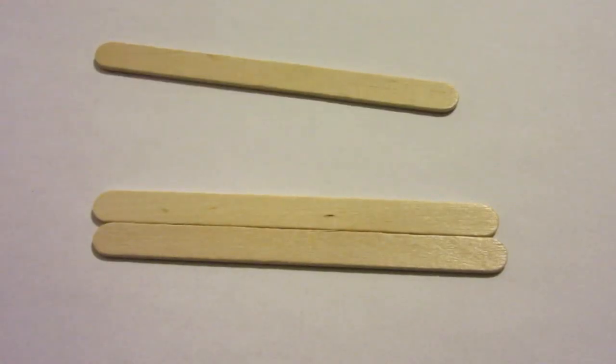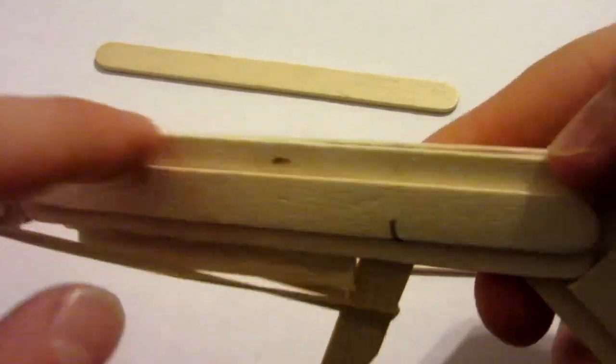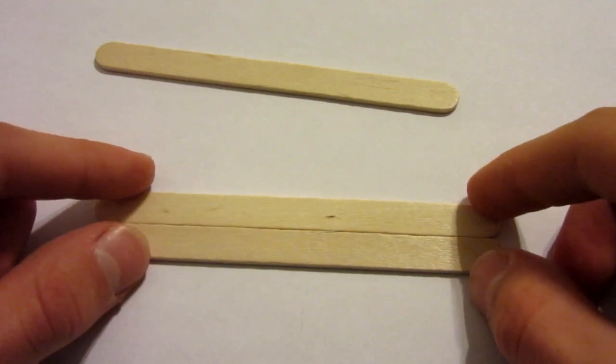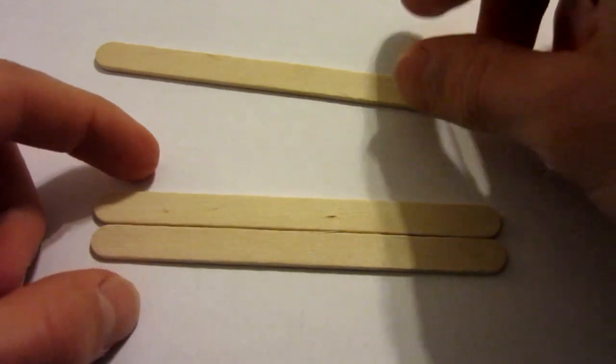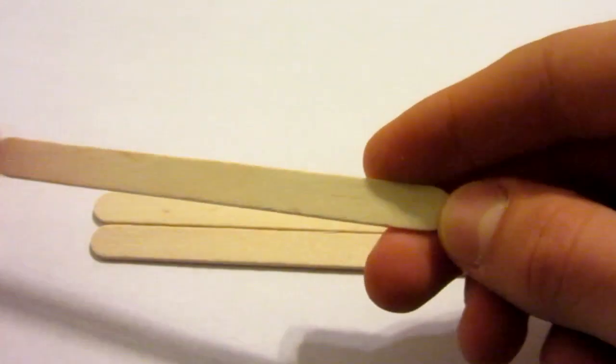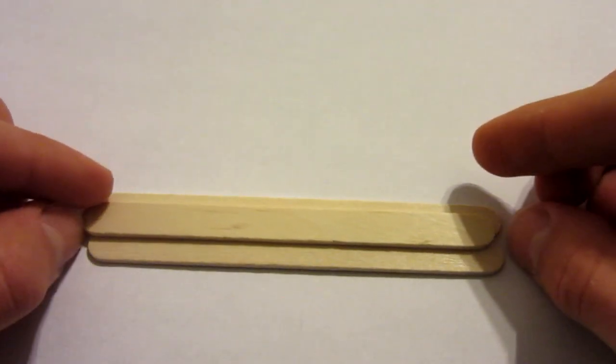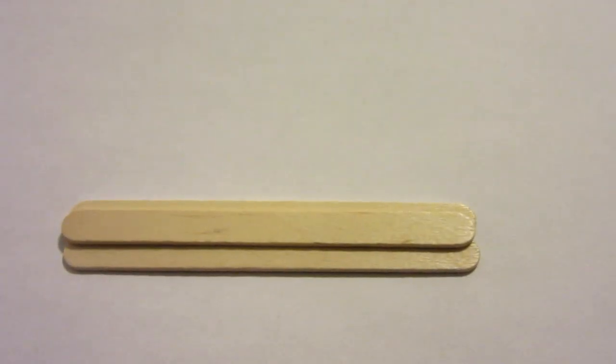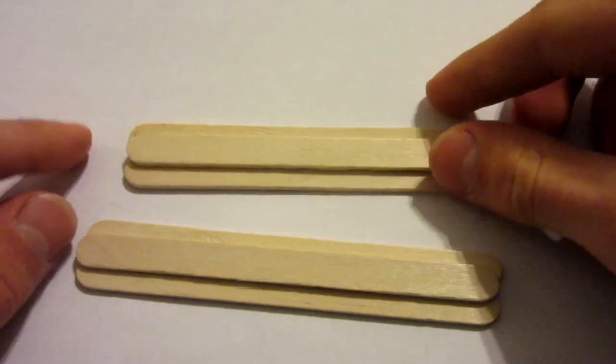First, you're going to want to make the body part of the gun, as seen here. There are 2 sides. So what you do is get 3 popsicle sticks, put 2 together like that, apply hot glue to the face of this one, and put it upside down right in the middle, and make 2 of those.